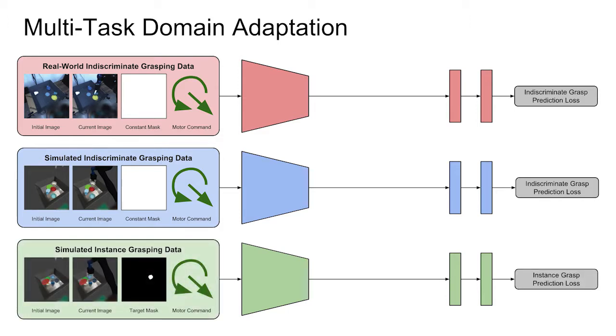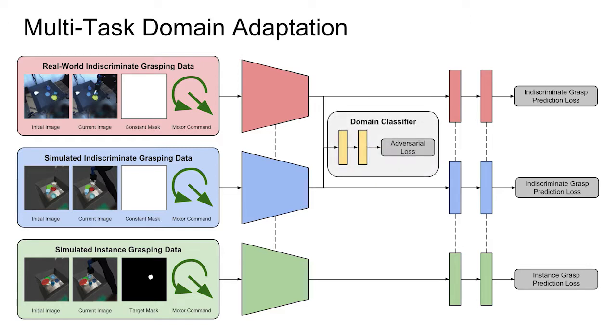The neural networks for the three towers share parameters as denoted by the dashed lines. To mitigate the domain shift, the adversarial loss regularizes the neural network weights through the domain classifier. By minimizing the four losses simultaneously with respect to its weights, the neural network is trained to predict the instance grasp success probability with transferable features between the simulation and the real world.